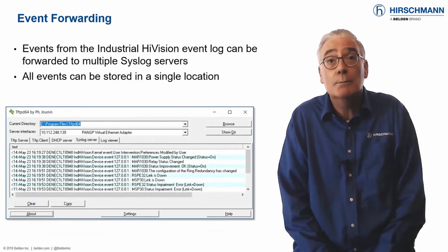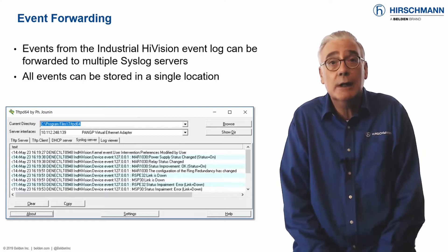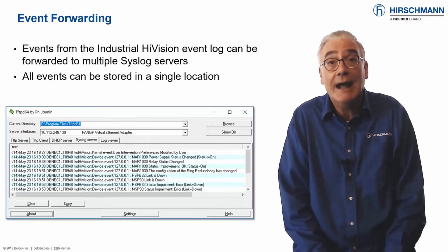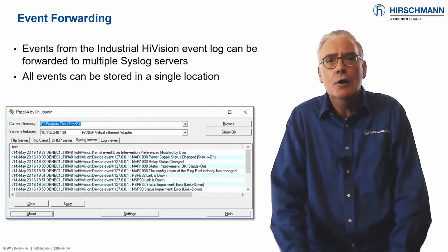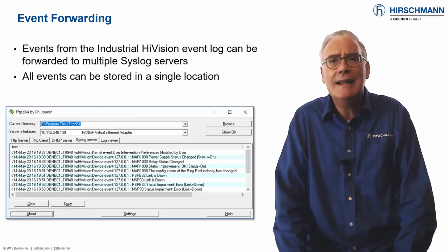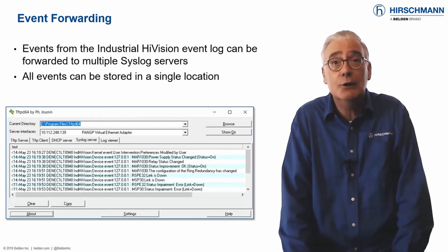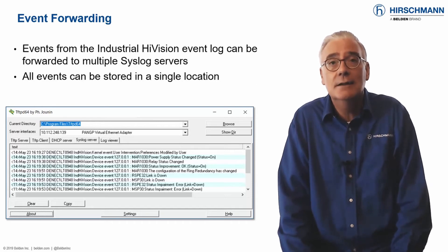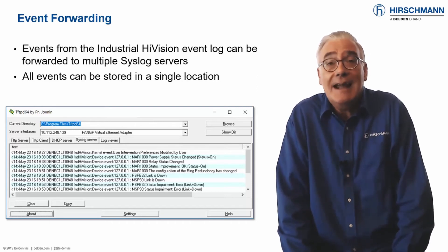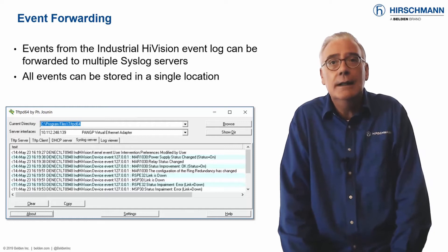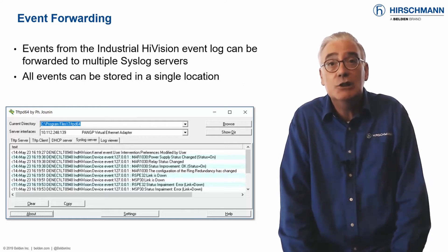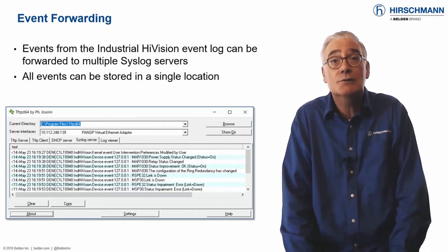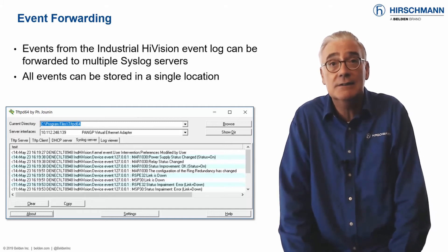The events stored by Industrial HiVision are intended to be used for short-term network administration and fault-finding. For long-term storage and analysis, it's common to use a central location to store all events. This location is typically a syslog server.